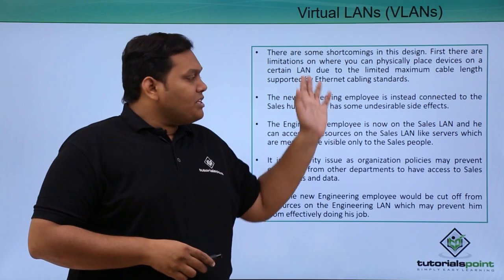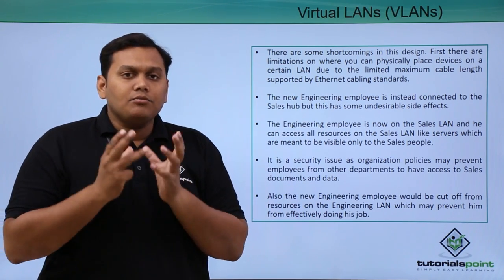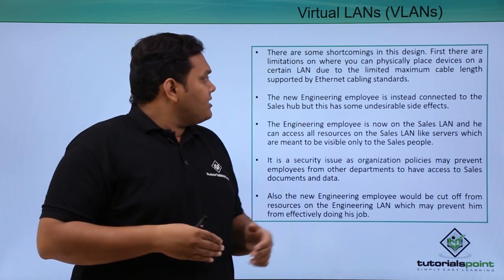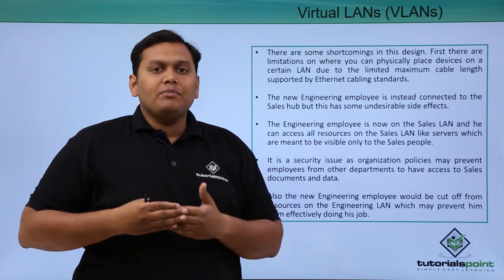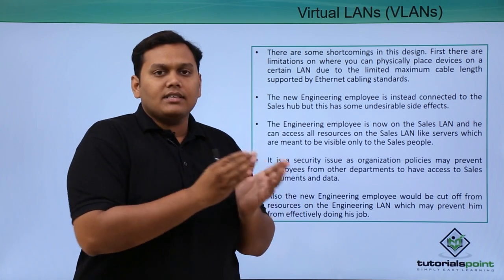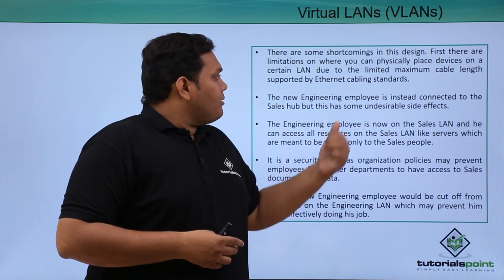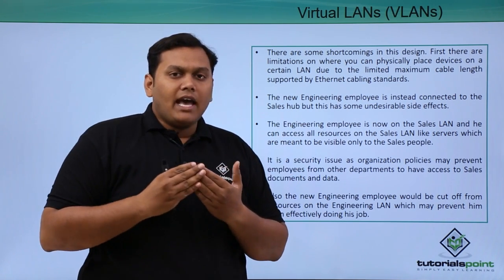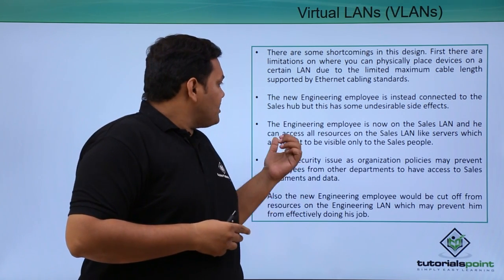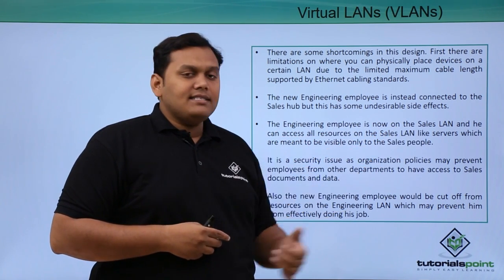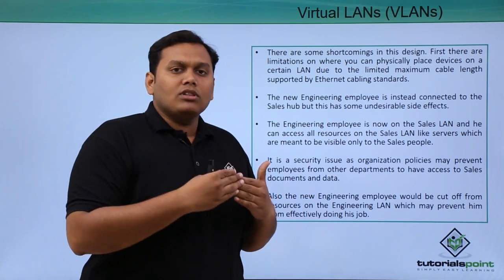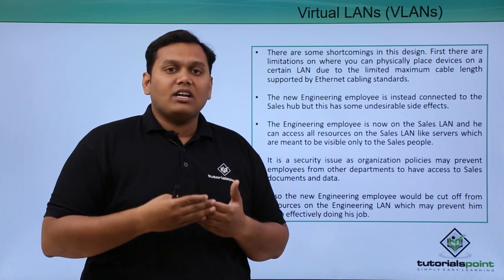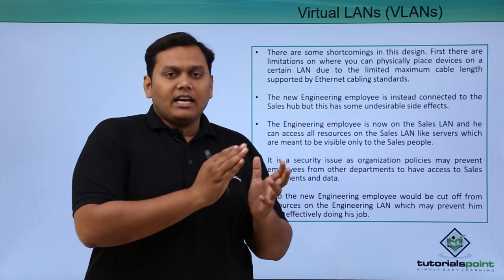There are significant shortcomings in this hub-and-router design. First, there are physical placement limitations — due to the maximum cable length of the Ethernet standard, devices cannot be extended beyond a certain distance, meaning no scalability. Second, a new engineering employee accidentally connected to the sales hub would be on the sales LAN instead of the engineering LAN, violating company policy and preventing him from doing his job properly.